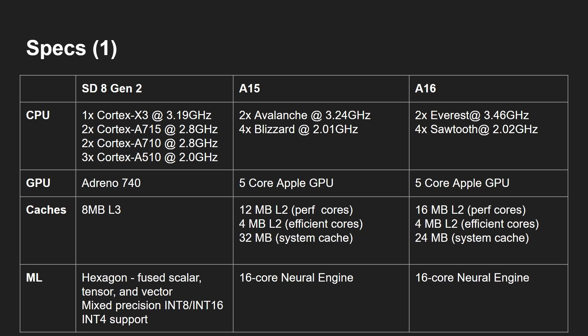For machine learning, the Snapdragon has the Hexagon processor with fused scalar, tensor, and vector processors, supporting mixed precision int8, int16, and now int4 — which itself gives a boost in ML performance. Apple has a 16-core neural engine, though Apple provides few technical details beyond some performance numbers in TOPS.